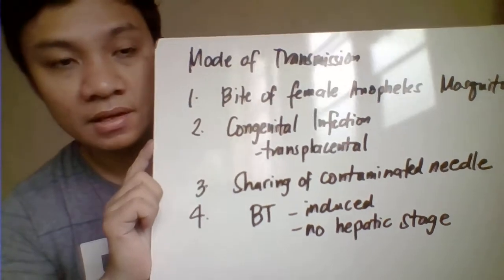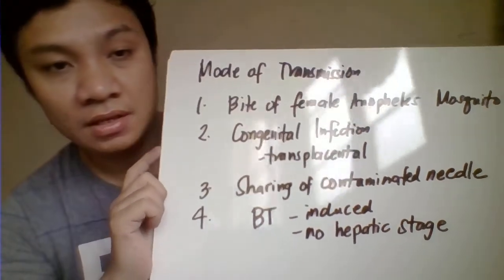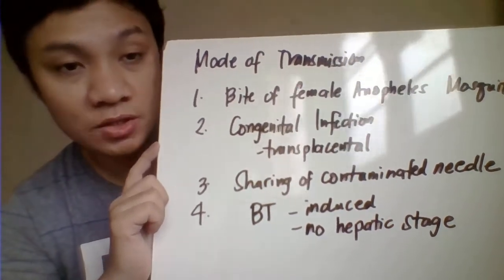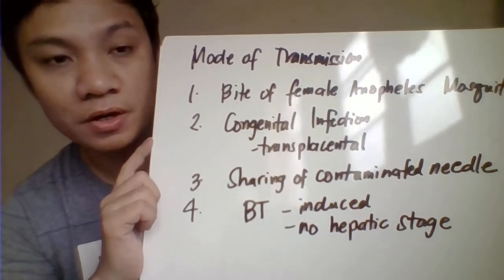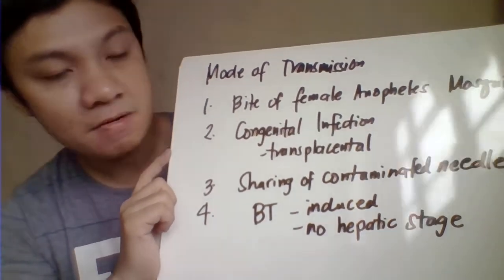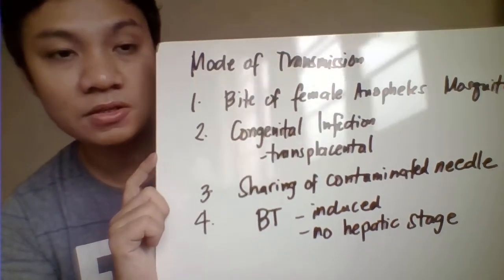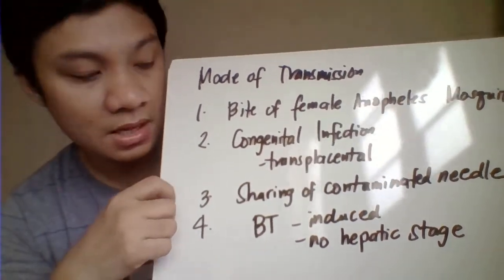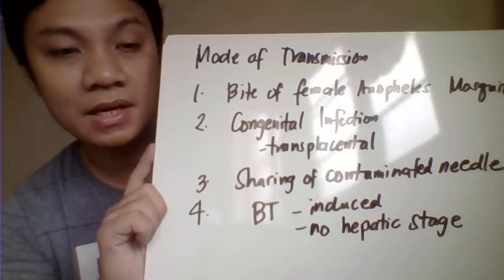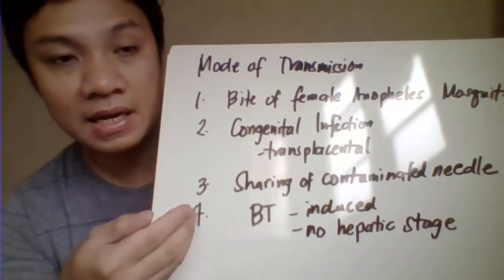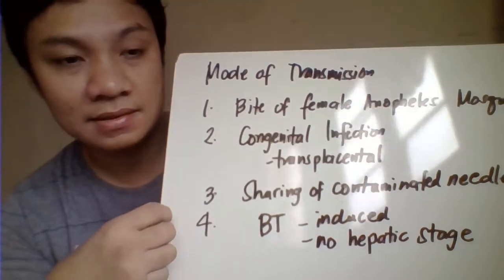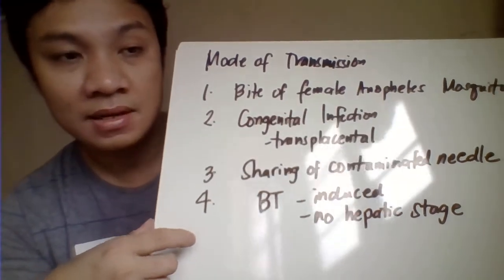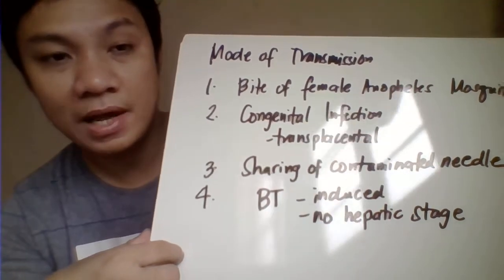There are different modes of transmission of the infection. First, the bite of the female Anopheles mosquito injects the infective stage — the sporozoites — into the human. Second, infection can occur by transplacental transfer when the mother is infected during pregnancy and shares blood with the baby. Third, sharing contaminated needles among IV drug users. Fourth, blood transfusion, which is considered the induced type of transmission because it has no hepatic phase.